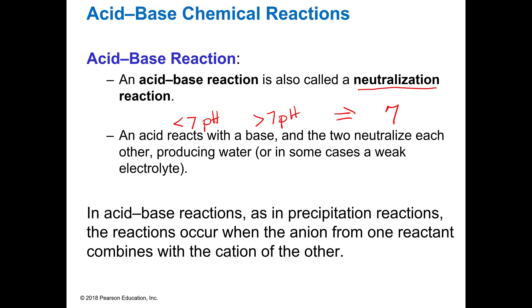And just like in precipitation reactions, we're going to have an anion combining with the cation of the other and that's how we're going to predict the products.